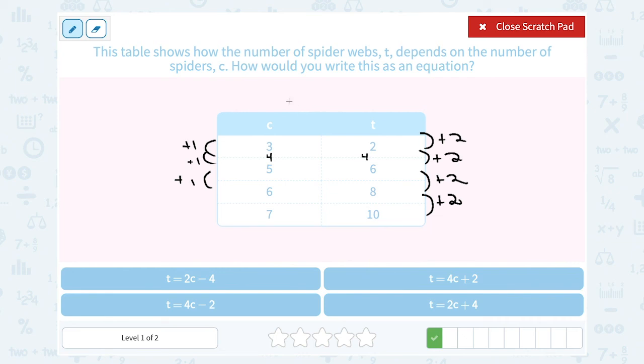So notice my C column is going up by 1, and my T column is going up by 2. So another way to say that is T is increasing twice as fast as C, or T is equal to 2C. And then I also have to look and see, is there a number I would add or subtract to make this work? Because it can't just be T equals 2C, because if I put 3 in, that would give me 6, not 2. Well, do I think I'm going to add or subtract something? If 2 times 3 gave me 6, I must be subtracting something to get down to 2. How much would I have to subtract? 4.